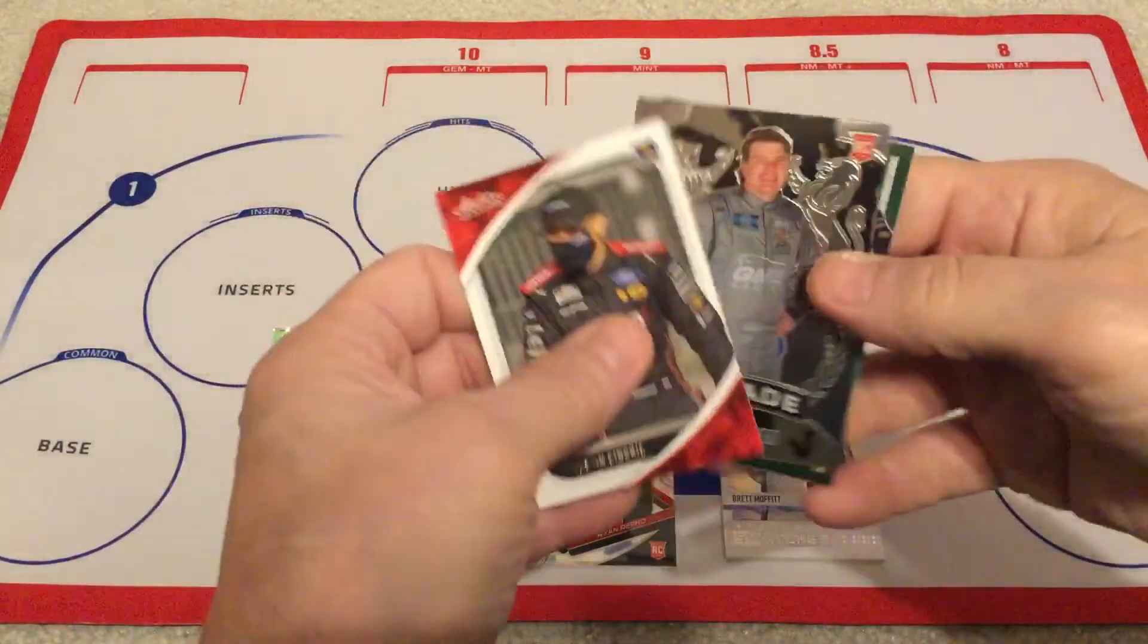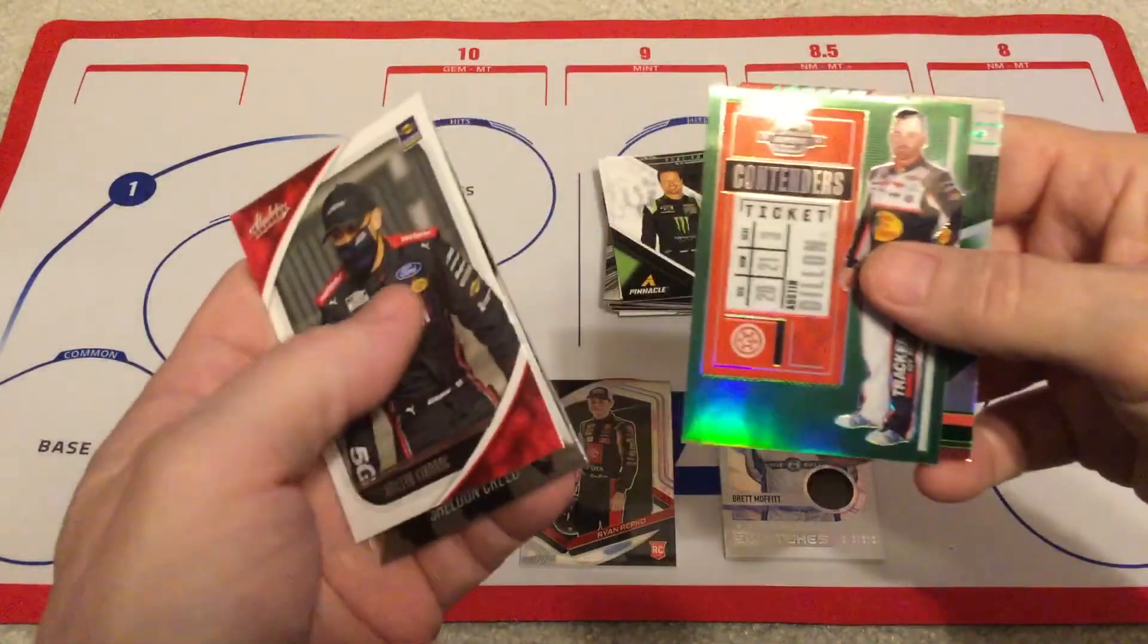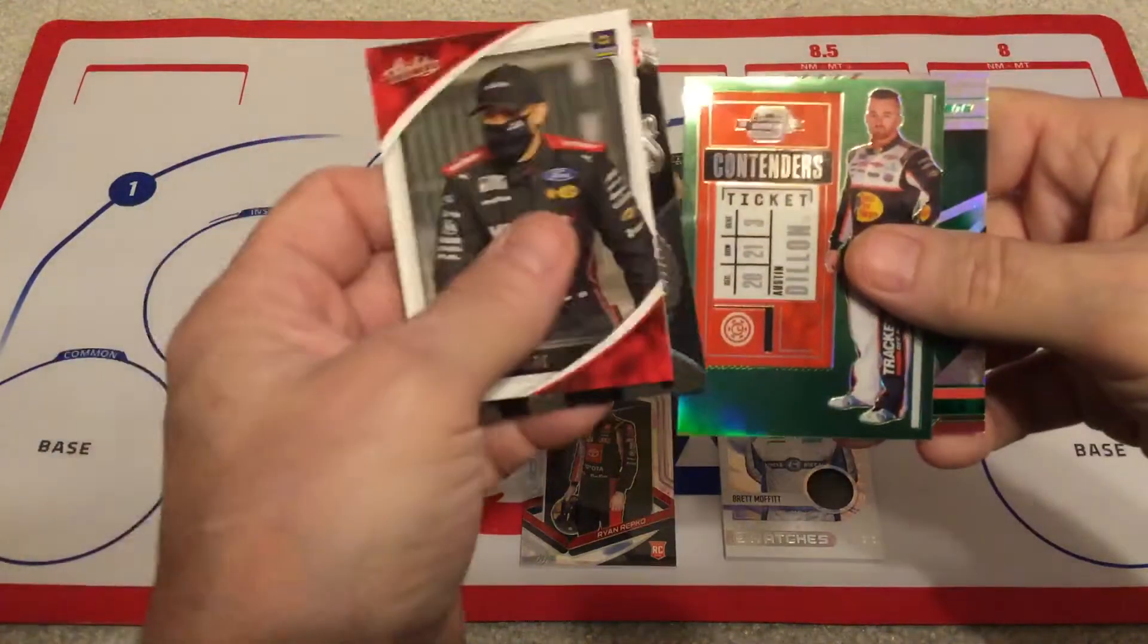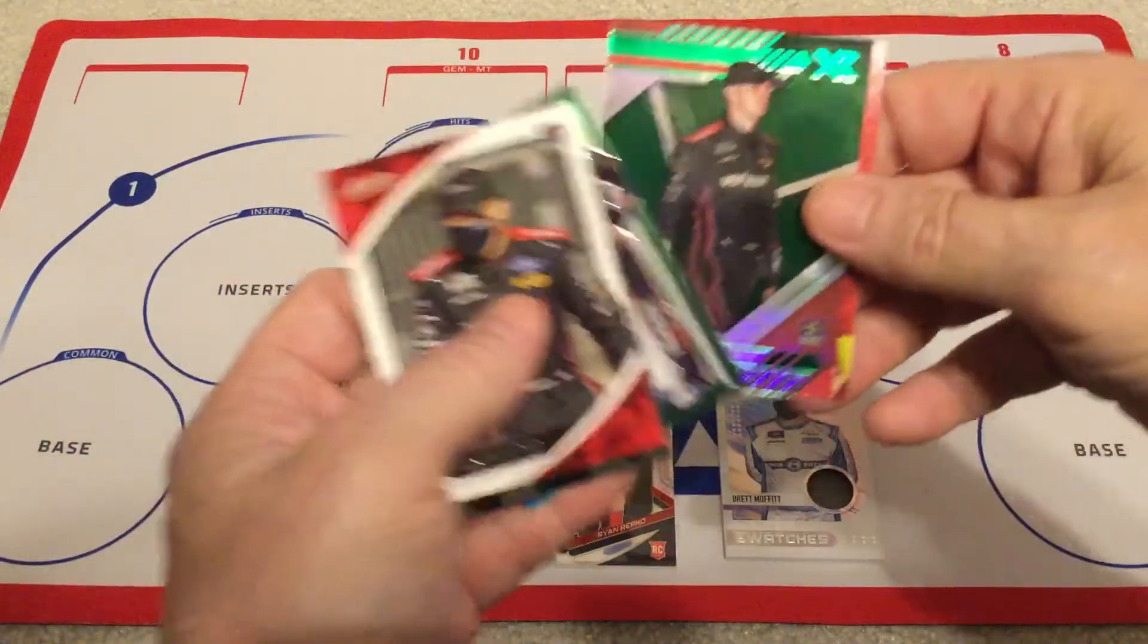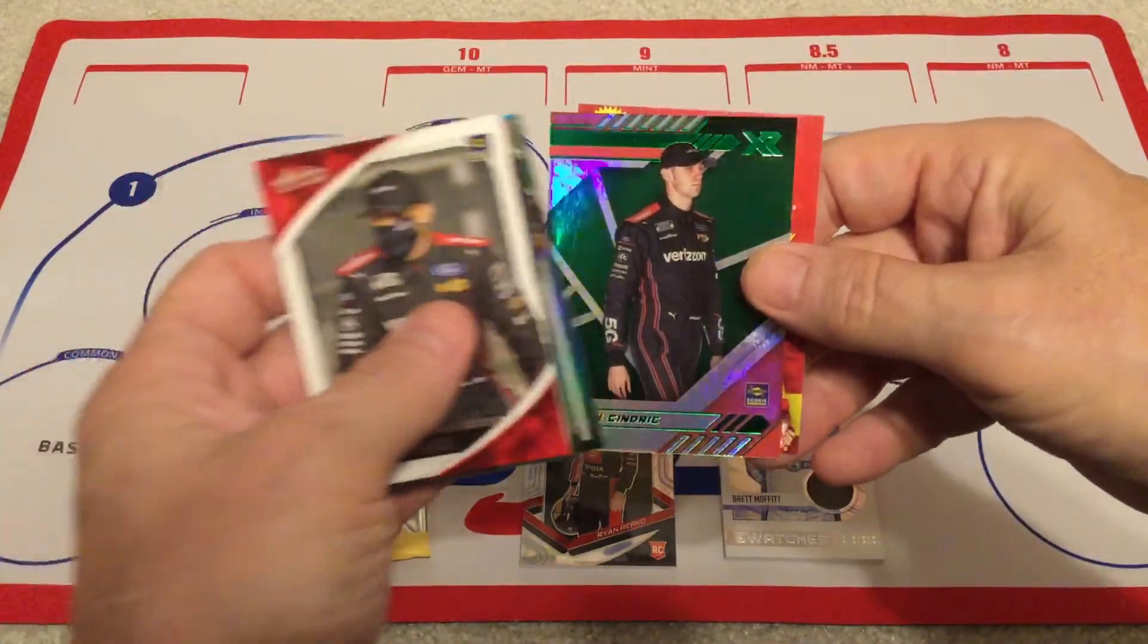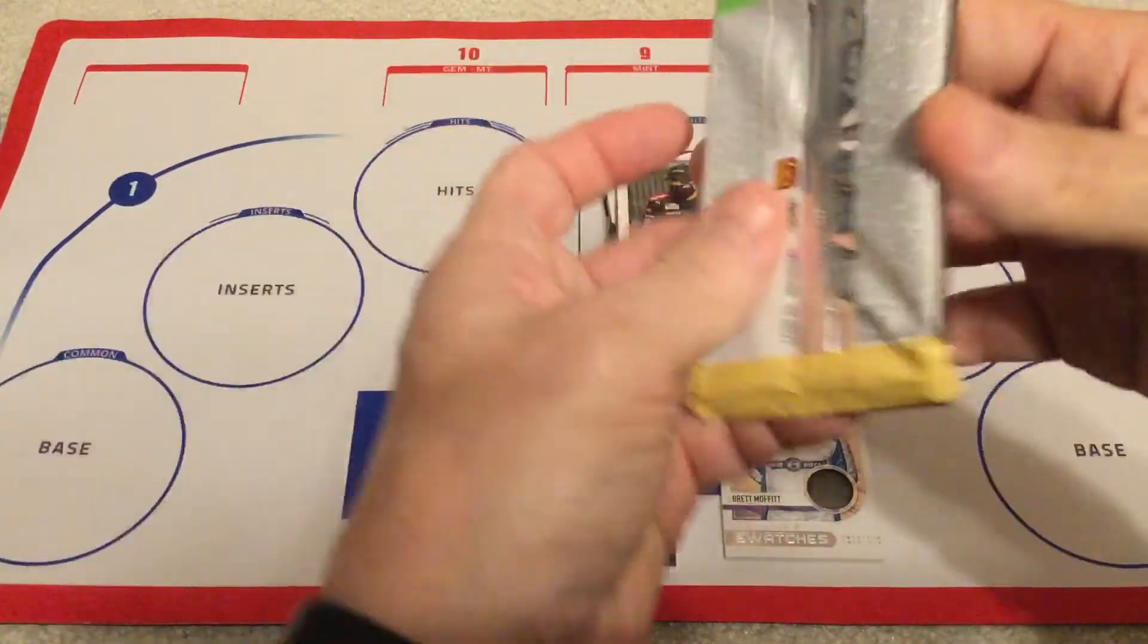And then, Crusade. Got Sheldon Creed again. If you're a Sheldon Creed fan, he is all over the place in Chronicles. There's a green Contenders of Austin Dillon. And a green XR of Austin Sendrick. So, pretty cool. Not too bad. I don't have a lot of sorting to do, it looks like.